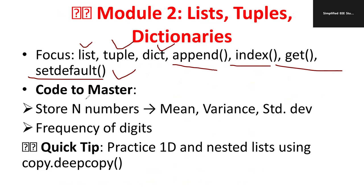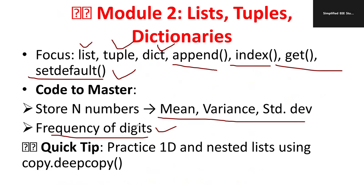Regarding coding, study programs on how to calculate the mean, variance, and standard deviation of a set of numbers. Also study how to find how many times a particular key or value repeats in a dictionary. Write the algorithm first, then develop the code. Normally, code carries a weightage of 10 marks — approximately three to four marks for the algorithm, four marks for program development, and two marks for the inference.